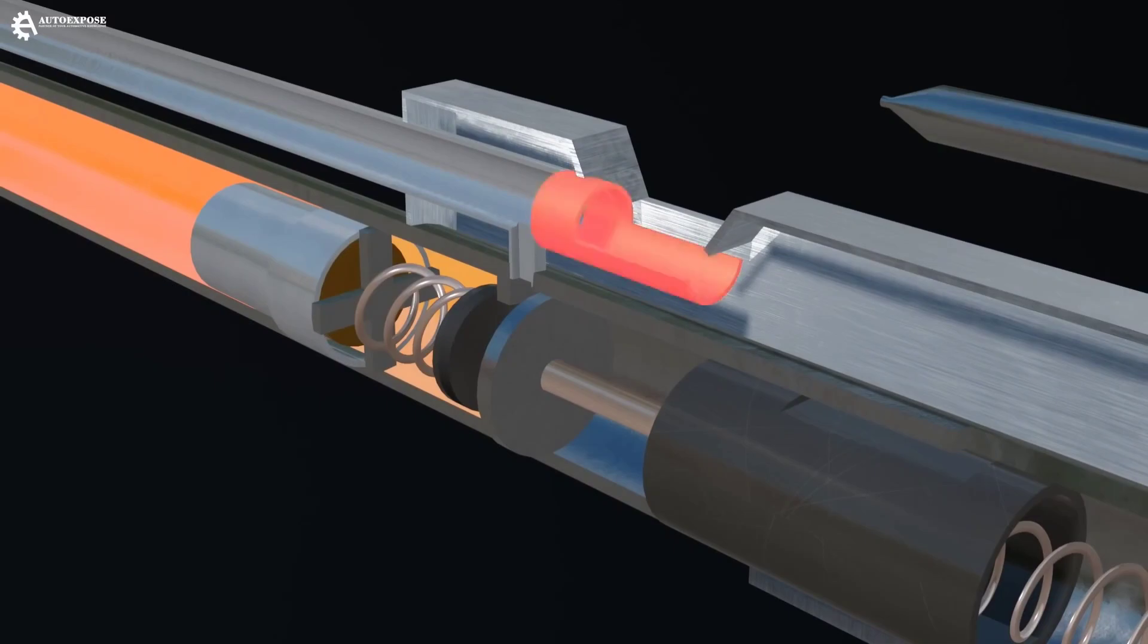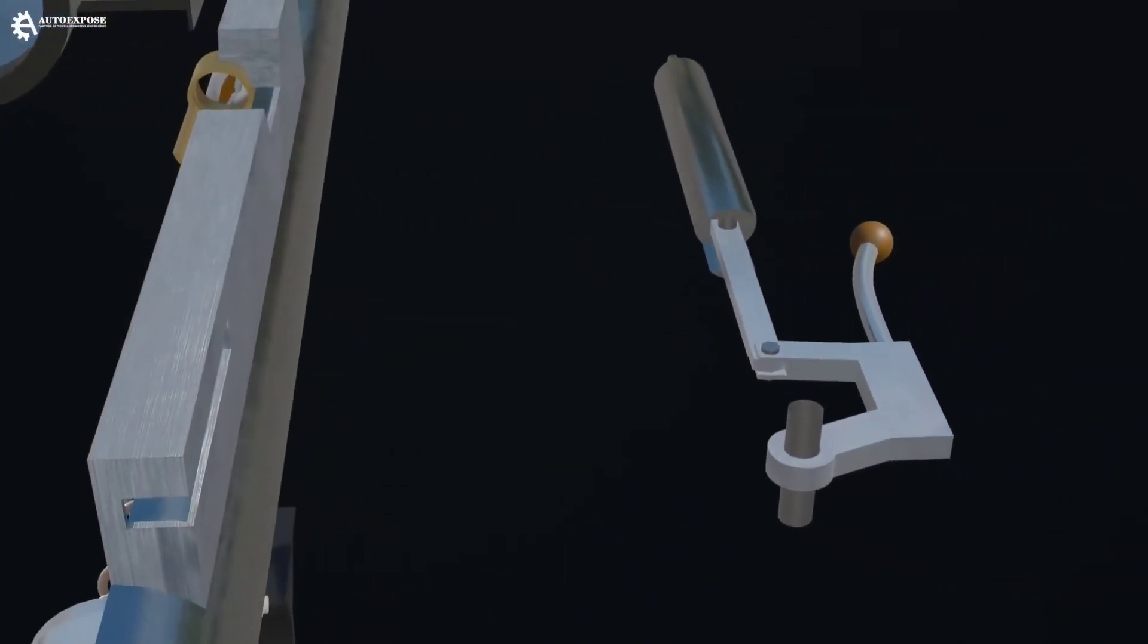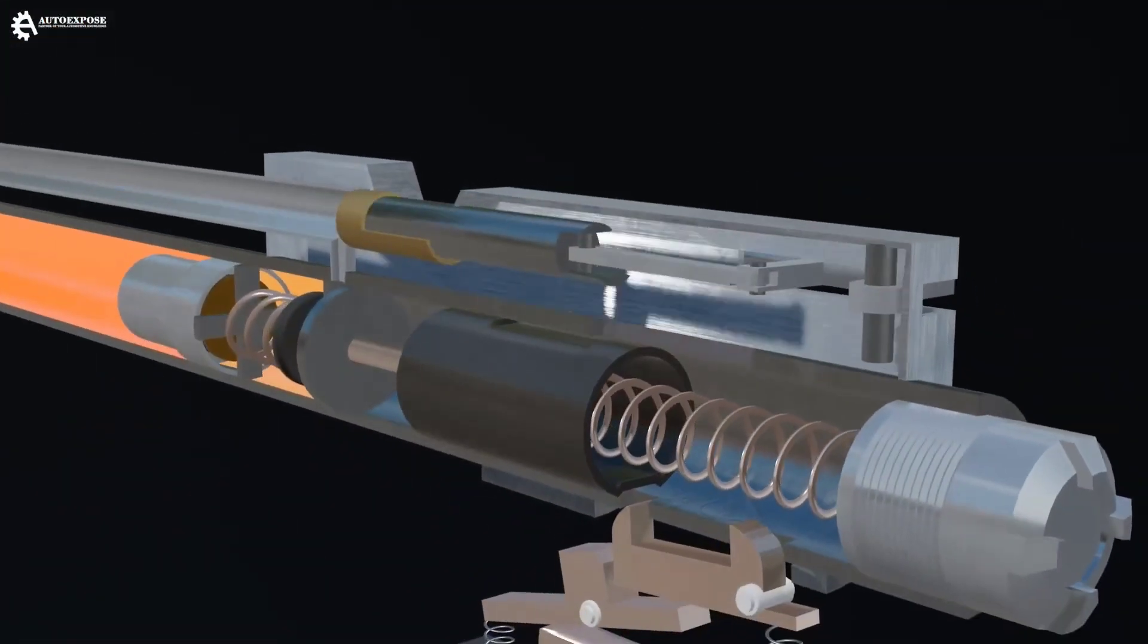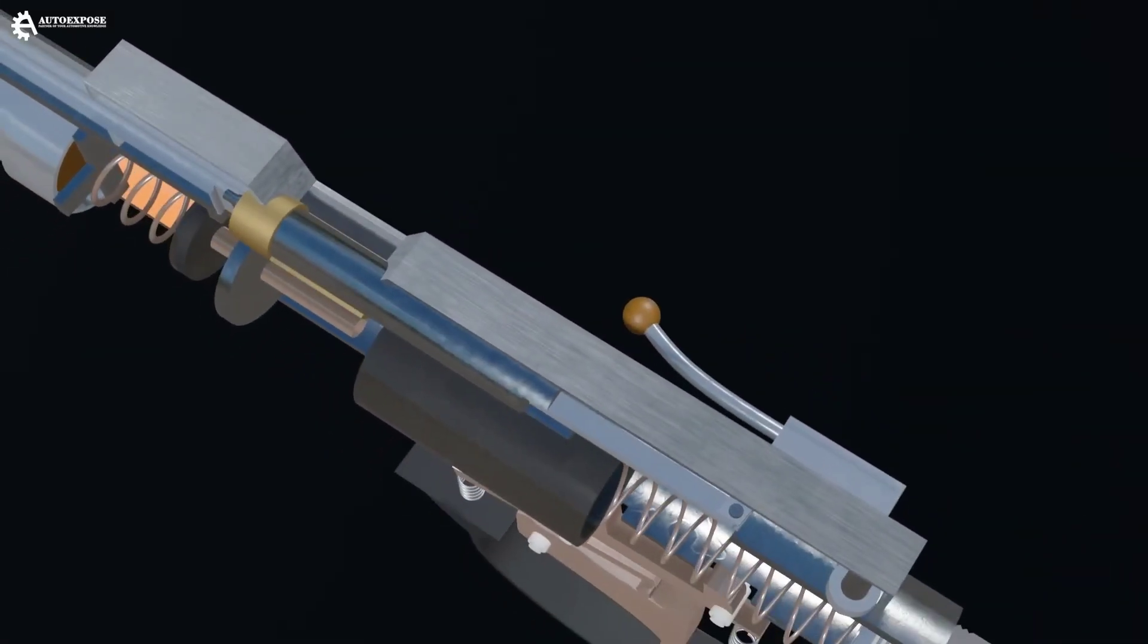Then, we move on to the bullet mechanism. The bullets in this air rifle are placed one by one manually. The gap you see is used to place the bullets.